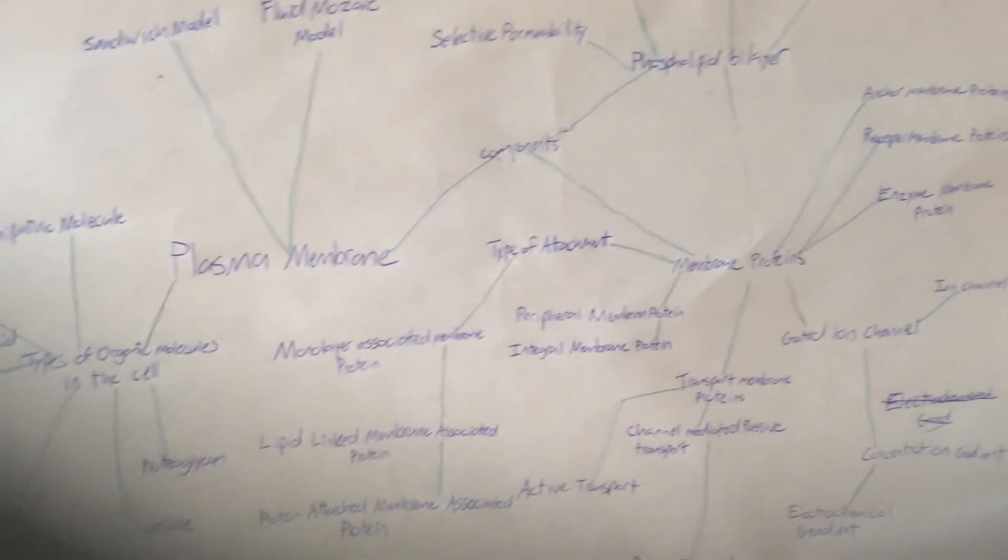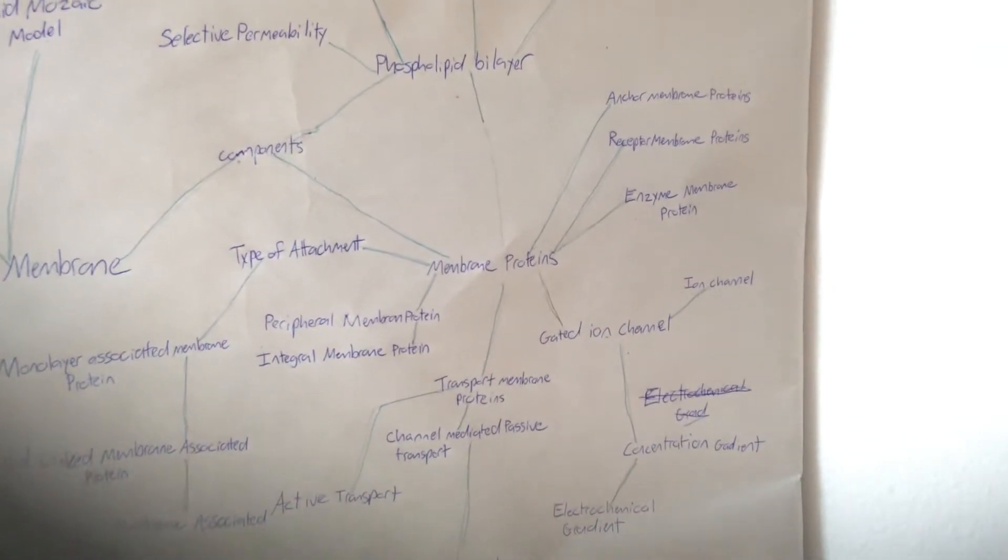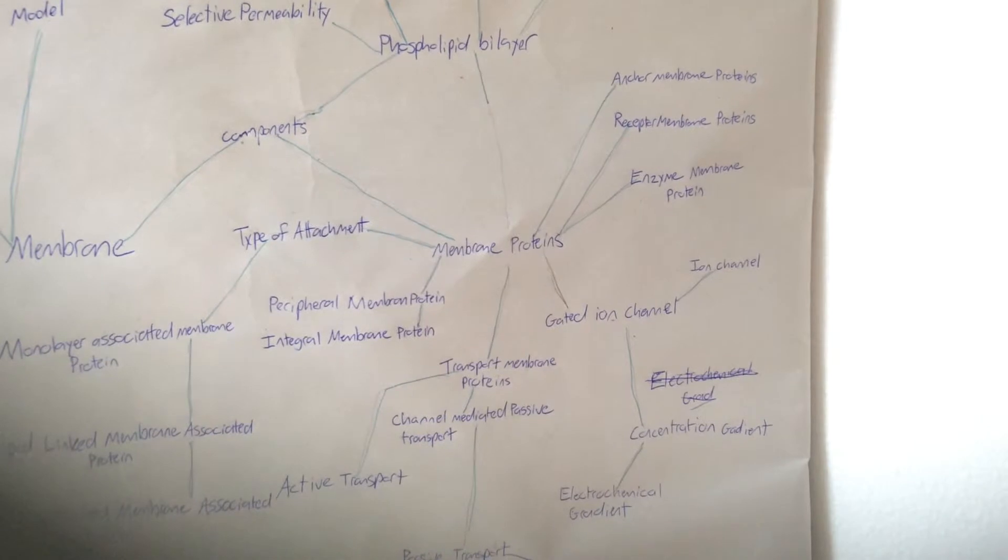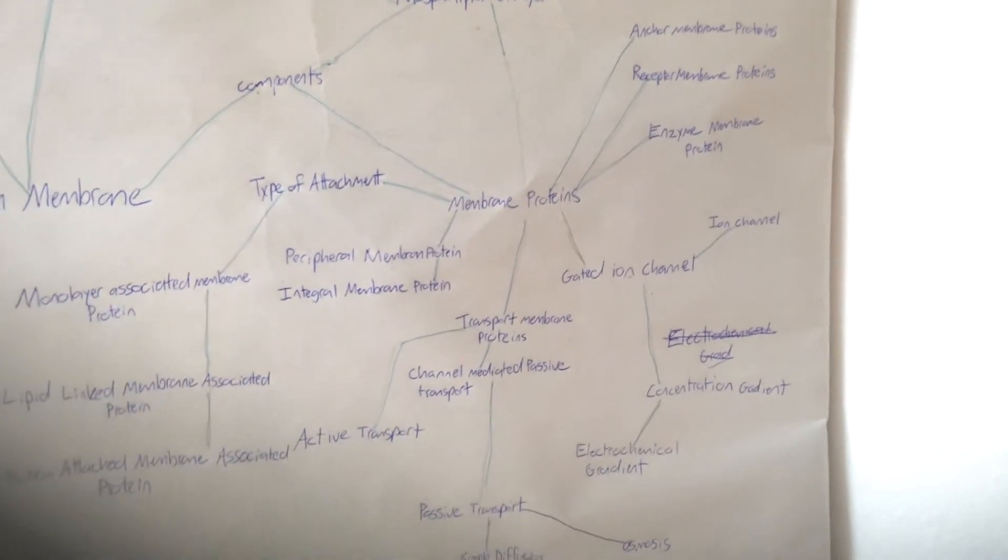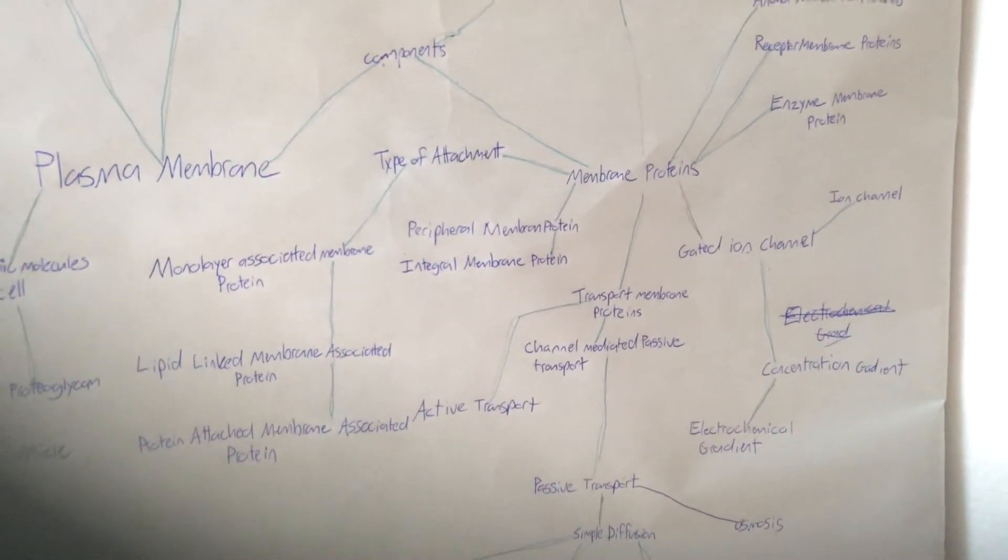And then from there, we go back down to components, and then we go down over to membrane proteins. And then up here, we have anchor membrane proteins, receptor membrane proteins, enzyme membrane proteins. And then from there, of course we go back to membrane proteins.